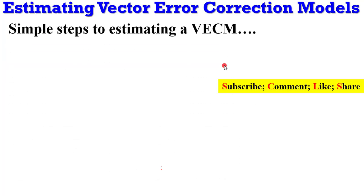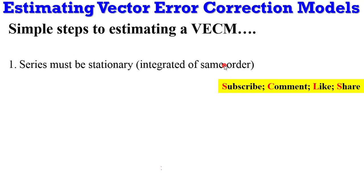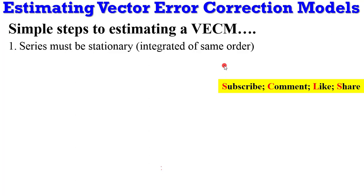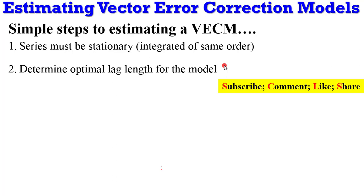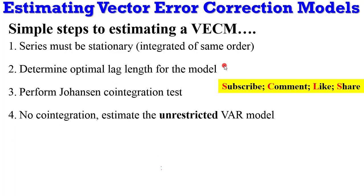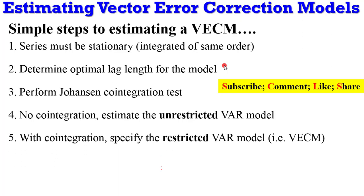To estimate a VECM, here are some simple steps. First, ensure that the series you want to use are stationary — that is, they are integrated of the same order. Second, determine the optimal lag for the model. Third, perform the Johansen co-integration test. If there is no co-integration, estimate the unrestricted VAR model. And if there is co-integration, specify the restricted VAR model, which is the VECM.